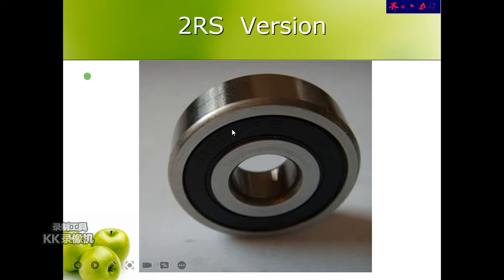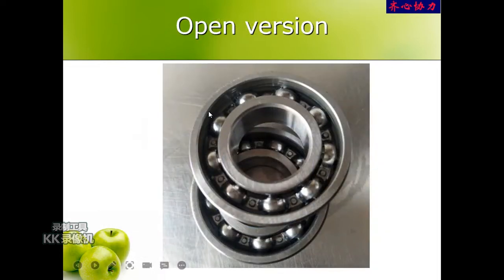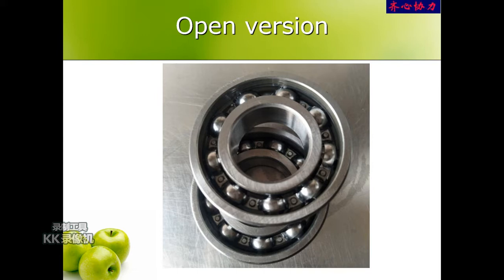Between the outside ring and the inner ring, we can see a black seal — sometimes the seal is red, green, or any color. This seal is made of rubber. That is the 2RS version, the most common version. Next is the ZZ version, which has a steel seal instead of rubber. Sometimes a bearing does not need a seal at all — that is the open version, meaning no rubber seal or steel seal. Those are the three types of deep groove ball bearings.